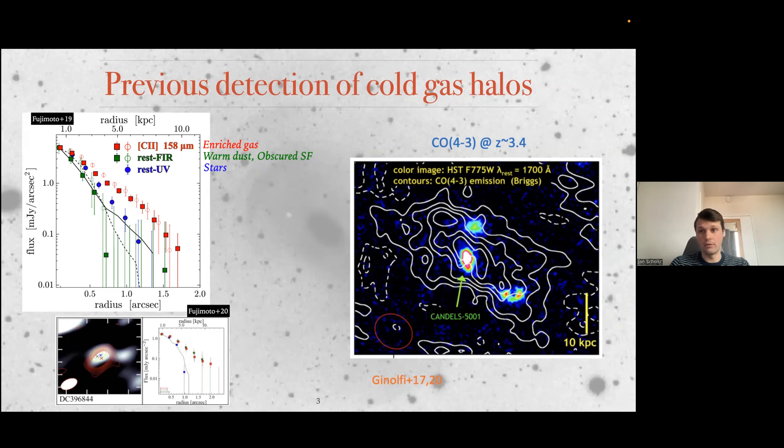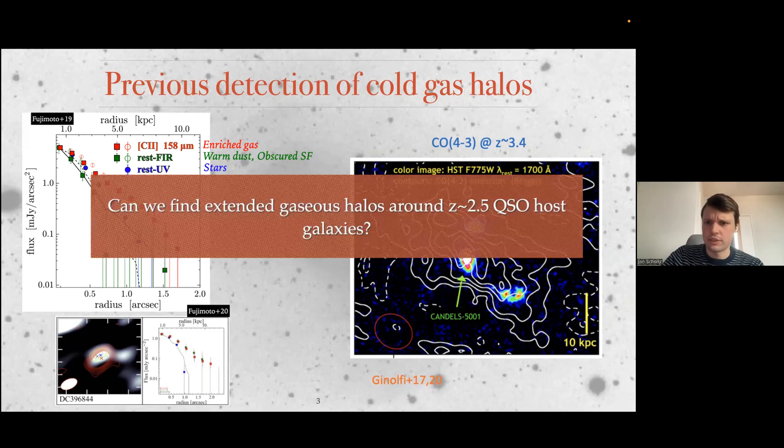Quasars have way more powerful outflows. Some of these can go 2,000 or 3,000 kilometers per second, both ionized and molecular gas outflows, which means that they should have quite a lot of this cold gas on a large scale. But nobody has really looked at it that much. So this is what we are trying to answer right now.